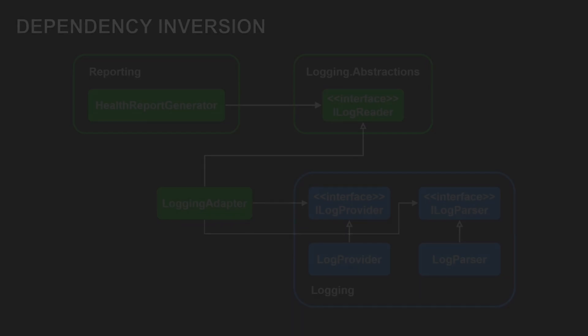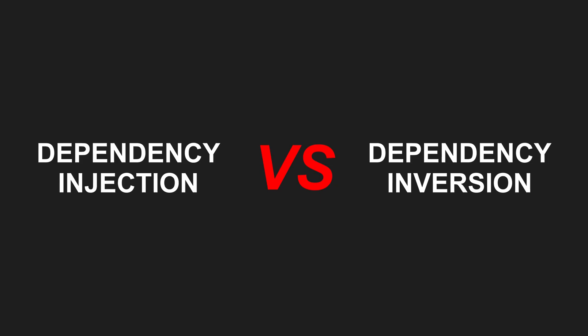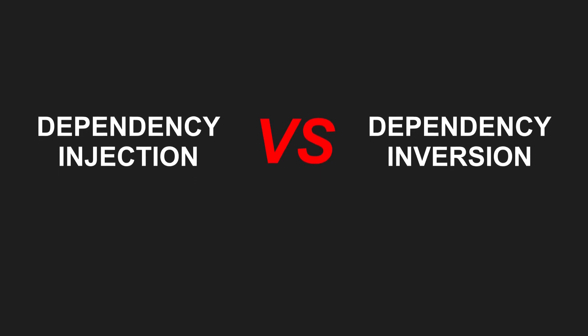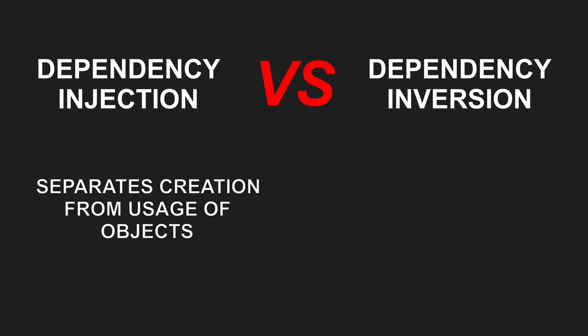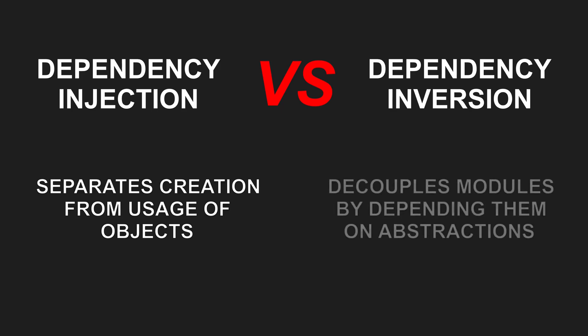So in the end, both concepts tackle the same problem — coupling — just at different levels. Dependency injection separates the concern of creating objects from the concern of using them, resulting in loosely coupled classes. Dependency inversion decouples modules by making both depend on abstractions, leading to flexible and reusable designs.